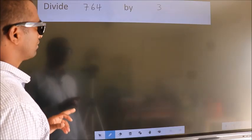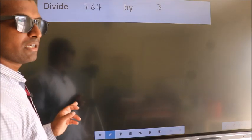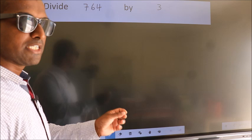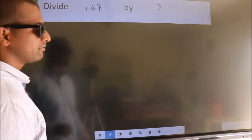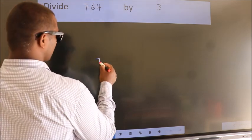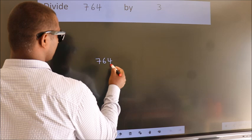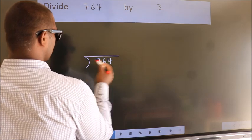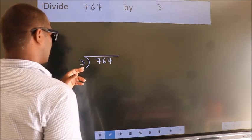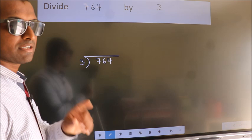Divide 764 by 3. To do this division, we should frame it in this way. 764 here, 3 here. This is your step 1.